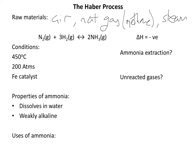Delta H equals negative, which tells us that the forward reaction is exothermic — heat would be released from this reaction, it would feel warm. Conversely, that also tells us what happens in the backward reaction: because if the forward reaction is exothermic, the reverse reaction is endothermic — it absorbs heat energy, so if you just looked at the reverse reaction, it would feel cold.